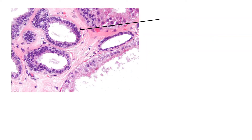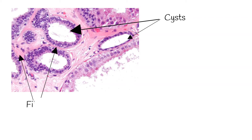Under the microscope, fibrocystic breast looks like fluid-filled round or oval sacs, which are called cysts, and a prominence of scar-like fibrous tissue, which is called fibrosis. Other types of changes are also common, such as overgrowth of cells and enlarged breast lobules.